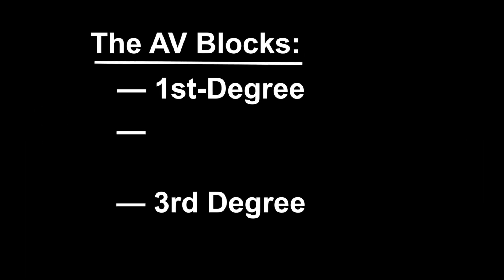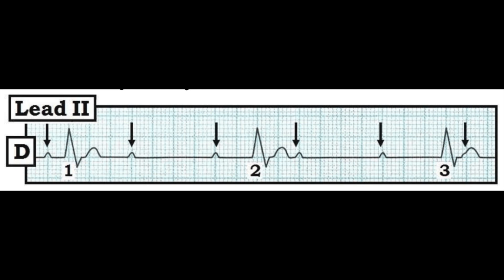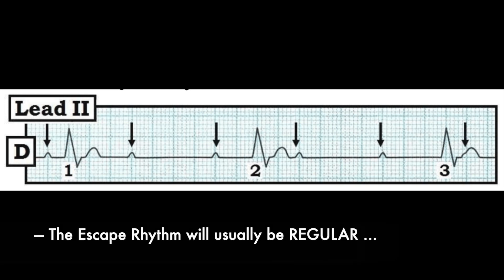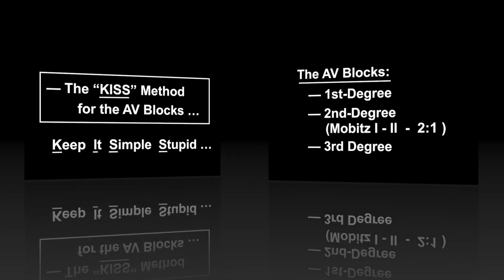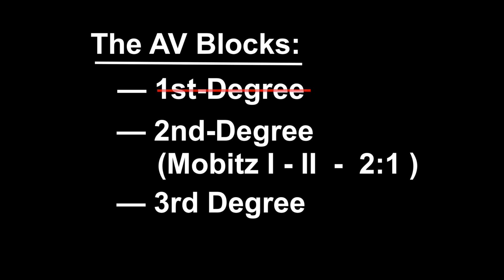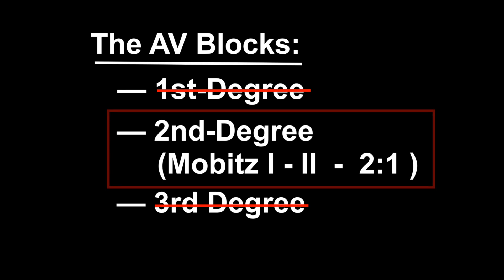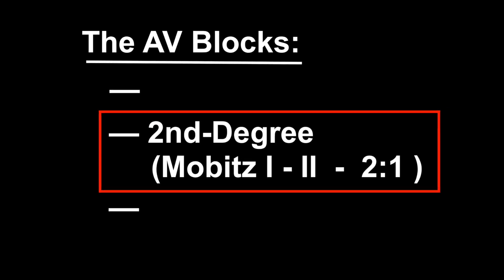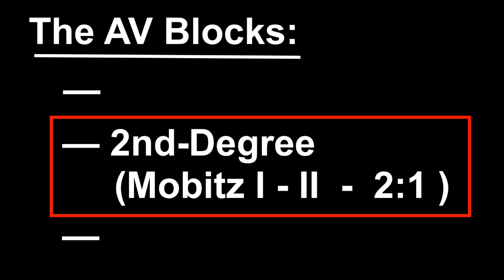For the third degree — also known as complete AV block, those are synonyms — that's also easy. Most of the time, not 100%, but most of the time, the escape rhythm, wherever it comes from — the junction or the ventricles — will be regular. So with the KISS method: if I have an AV block and it's not first degree and it's not third degree, what degree is it? It's second degree. There are three types of second degree AV block: Mobitz type 1, Mobitz type 2, and two-to-one conduction, which could be either Mobitz 1 or Mobitz 2.